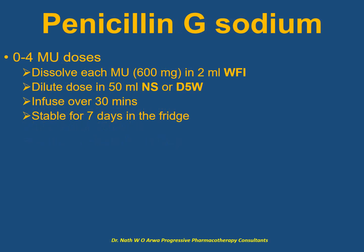For penicillin G sodium, dissolve each mega unit (600 mg) in water for injection, then dilute the prescribed dose in 50 ml of normal saline or 5% dextrose and infuse over 30 minutes. Stability is one week in the fridge.